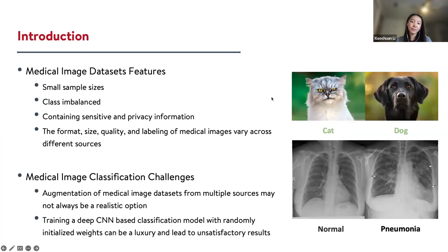This project is, in general, a medical image classification problem. There are many different types of medical images. In this project, the type of medical imaging used is chest X-ray images, which are typically used to diagnose lung disease such as pneumonia. Unlike natural images such as animal images — dog versus cat — medical image datasets have several distinctive features that may cause additional challenges in their analysis.